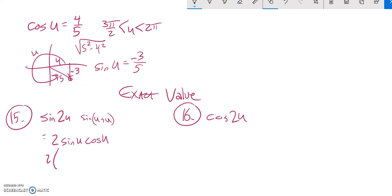So sine U is negative 3 fifths. Cosine U is 4 fifths, that was given. And this 2 is like a 2 over 1. So I can multiply everything together. 2 times negative 3 times 4 is negative 24, and that's over 25. So there it is right there.